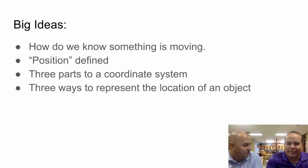All right. So today what we're going to be talking about, our big ideas that we're trying to think about are how do we know something is moving? We've been discussing this a little bit so far in class. What is position defined? There are three parts to the coordinate system. And then there's three ways to represent the location of an object. So those are the main big ideas we're going to be talking about today.